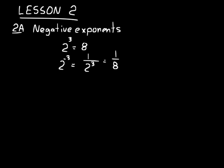To talk about this in terms of variables: that value 2 is called the base, and the 3 is called the exponent. So we could say x to the negative n equals 1 over x to the n. And in the same way, 1 over x to the negative n equals x to the positive n.